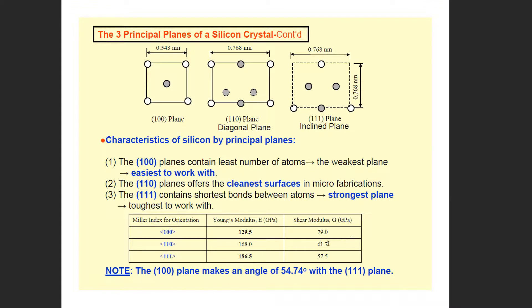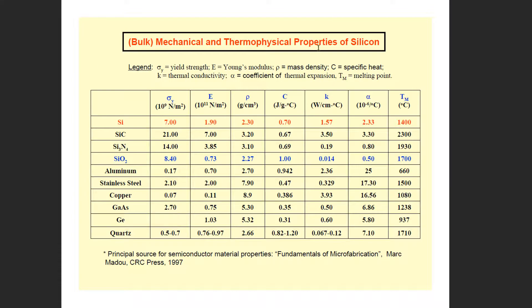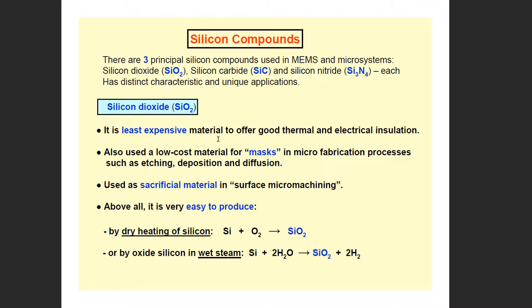Here we have the values of Young's modulus and shear modulus. There are mechanical and thermophysical properties of silicon, including properties like yield strength and Young's modulus. There are also comparisons with aluminum and stainless steel for different component values.